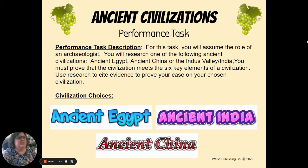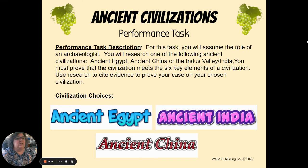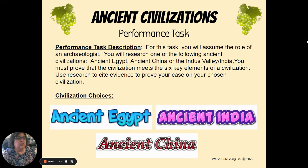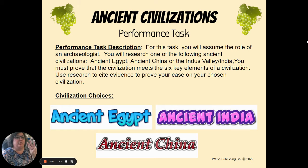For this ancient civilizations performance task, you are going to assume the role of an archaeologist. You're going to research one of the following ancient civilizations: either Ancient Egypt, Ancient China, or the Indus Valley - Ancient India. You must prove that the civilization meets the six key elements of a civilization. You're going to use your research and cite your evidence to prove your case on your chosen civilization. You have three choices: Ancient Egypt, Ancient India, or Ancient China - you're only doing one.